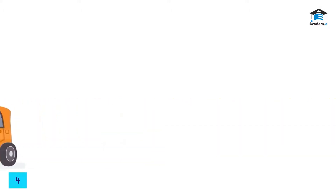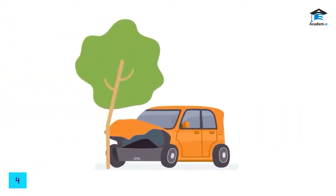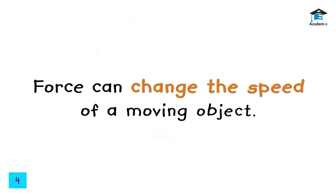Force can also make moving objects stop. For example, a running car stops moving when it crashes into a big tree. The position and mass of the tree allow it to exert enough force to stop the car. Force can also change the speed of a moving object.